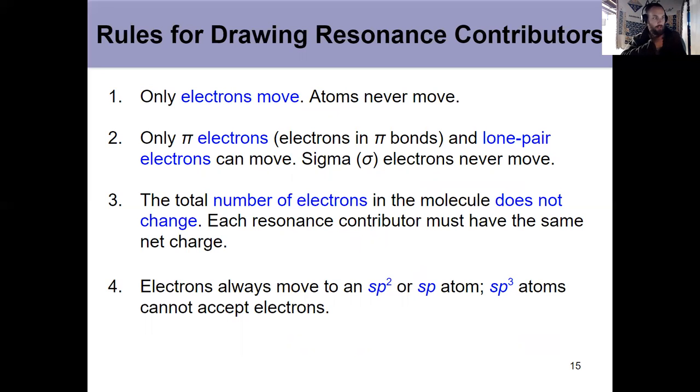Number three, total number of electrons in the molecule does not change because then you would be drawing ions. All the structures must have the same net charge, every resonance contributor. Lastly, electrons always move toward sp2 or sp hybridized atoms. You can't move electrons toward an sp3 hybridized atom because sp3 hybridized atoms have complete octets and they don't have pi bonds that can break. So don't push things towards things that are sp3 hybridized.